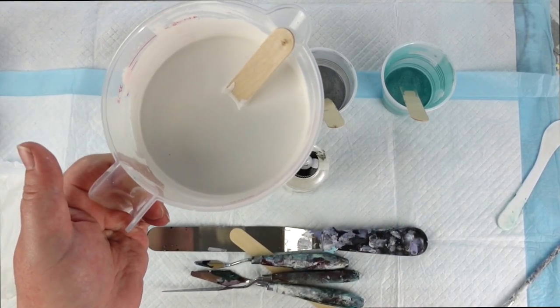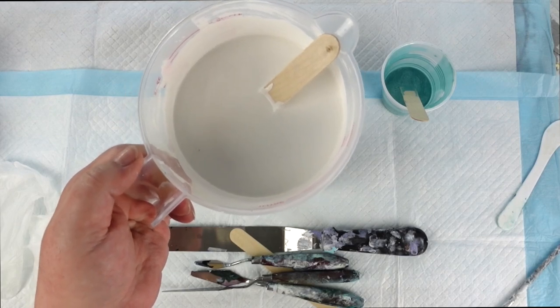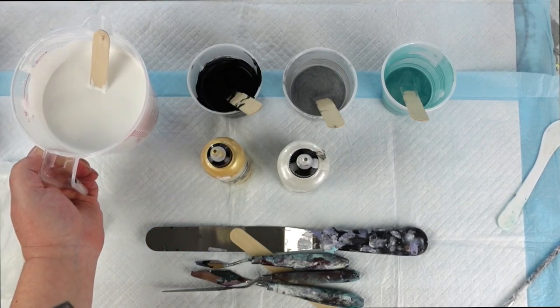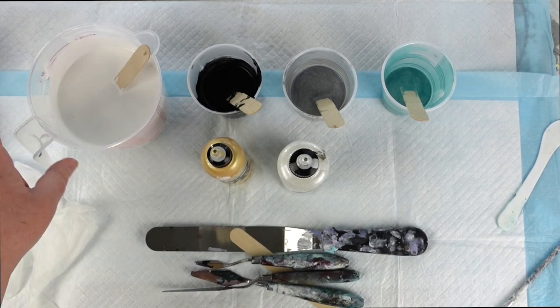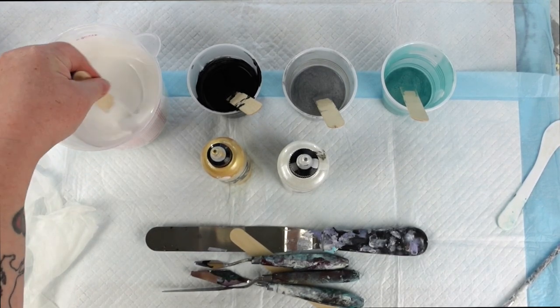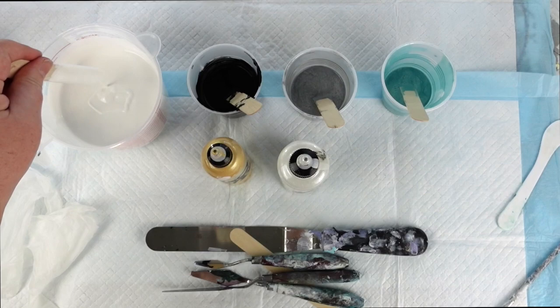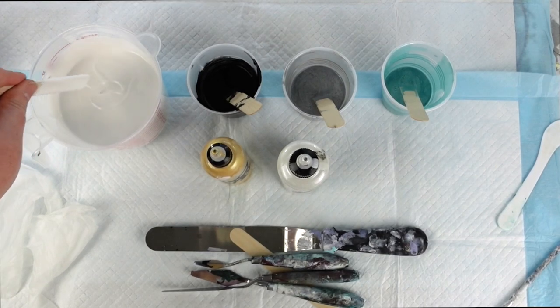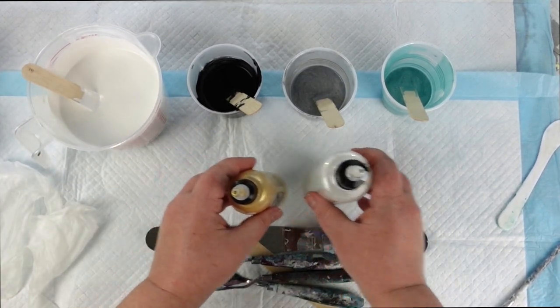It's mixed two parts Floetrol to one part paint, dash of Liquitex Pouring Medium, and I did put a little bit of water in this to thin it down, not like crazy thin—it's still leaving a trace, but a little bit is in there. I almost always add a little bit of water to my paint.